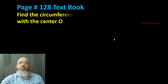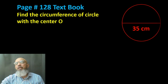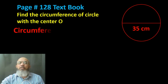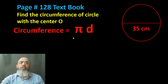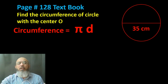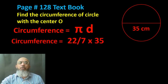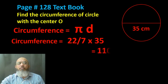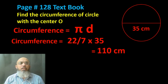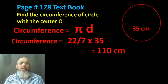Now, find the circumference when the diameter is 35 centimeters. The formula is C = πd. We can use 22/7 instead of 3.14. So: 22/7 × 35. Since 35 ÷ 7 = 5, we get 22 × 5 = 110 centimeters. Note: we did not cover the formula for area of a circle today — that will come in the next lecture.